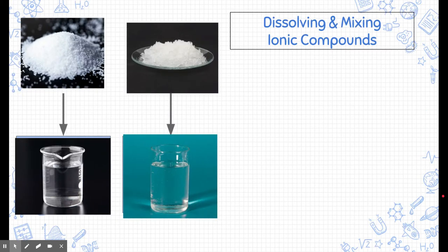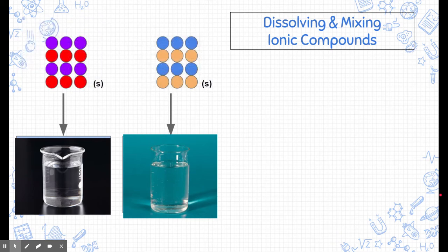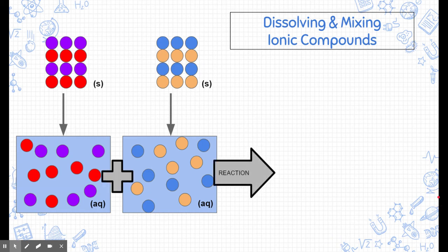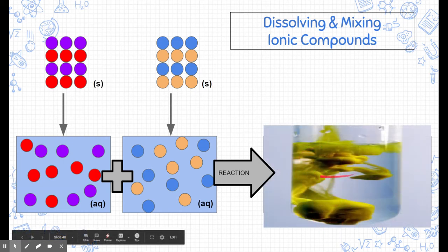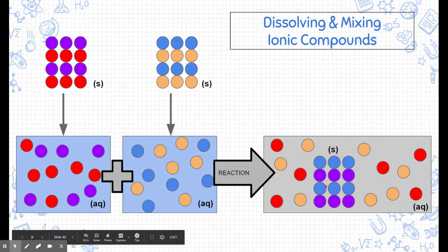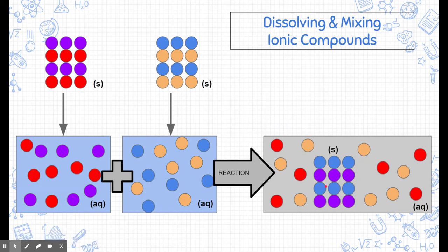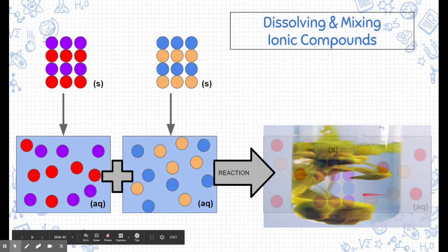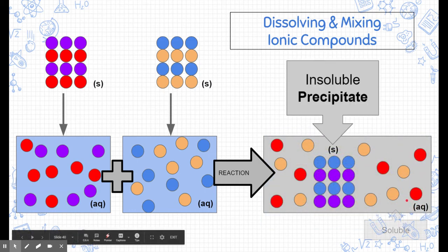Let's review what happens when we take two different substances, dissolve them in water, and mix them. Here are two different substances in their atomic forms — pure substance compounds in their solid forms. If we dissolve them in beakers of water, their substances split apart and they become aqueous. When these two substances react, sometimes they form this little gloppy stuff — this is a precipitate, a solid that forms because the substances come together and react. The other two particles still stay dissolved and remain in their soluble forms.